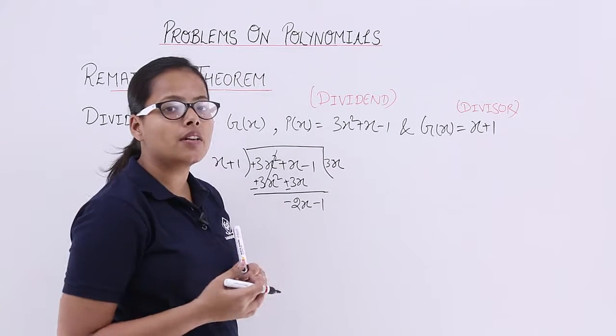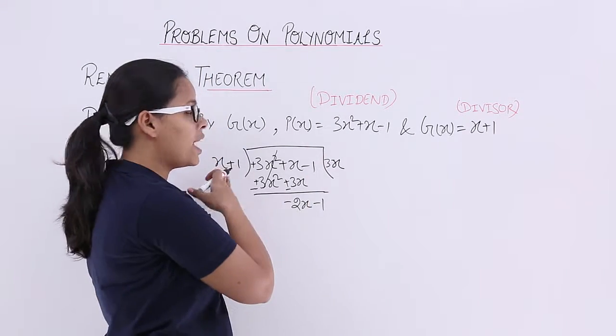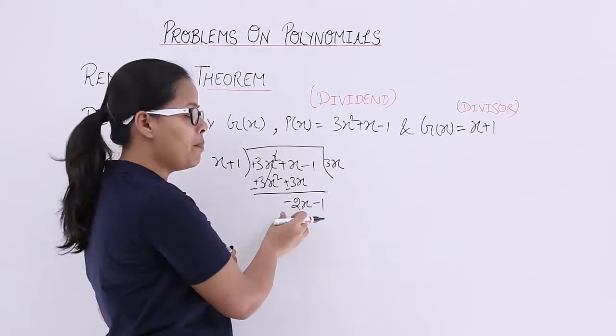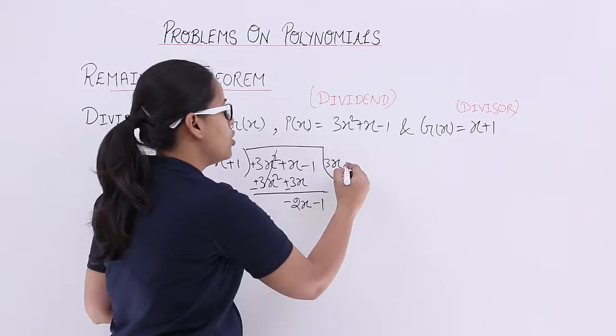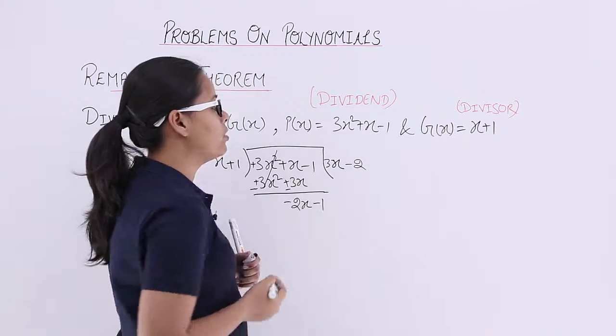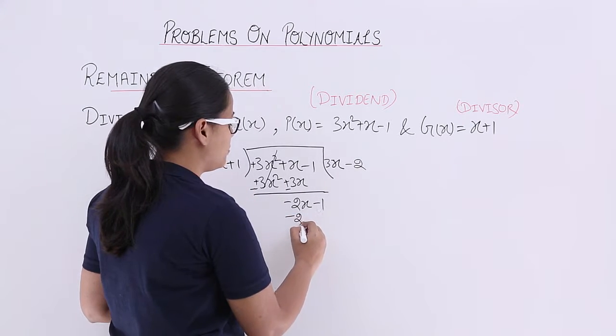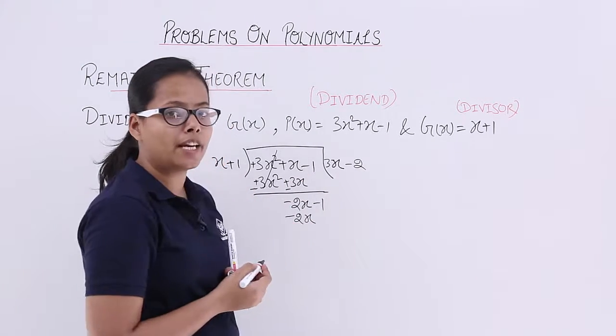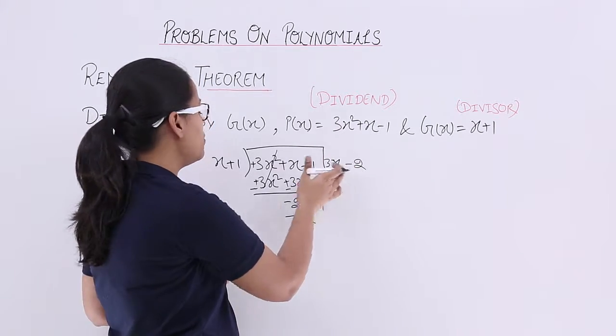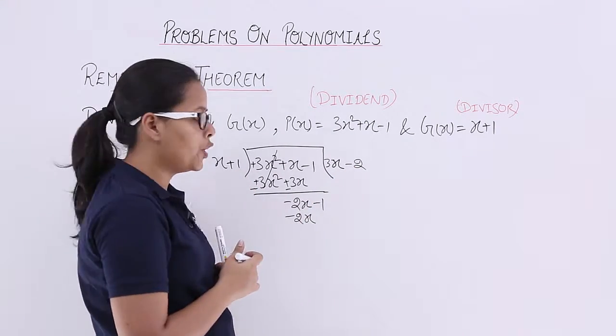In quotient, the second term should be, when you multiply that second term with x, it should be -2x. When you take -2 here and multiply this x with -2, what you will get? -2x. And when you multiply this -2 with 1, what you will get?